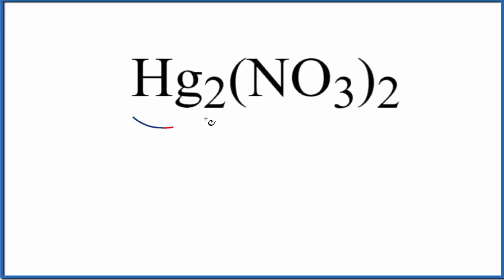Let's write the formula for Hg2(NO3)2. So we'll start off, we know that mercury, Hg, here is a transition metal.